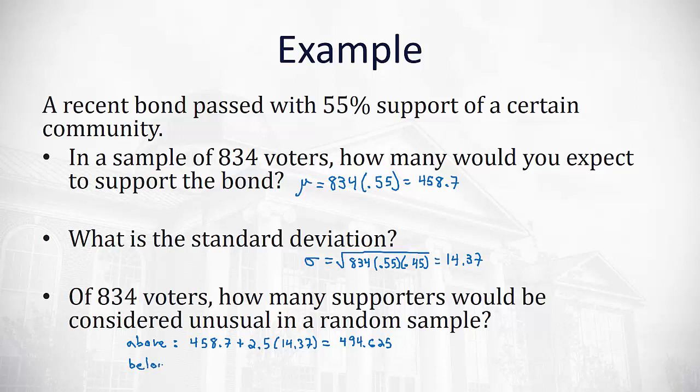Or anything below, very similar calculation, we're just going to subtract 458.7 minus 2.5 standard deviations, or 2.5 times 14.37, which gives us 422.775. So if we have less than 422.775 voters in support of the bond, we're probably skewed to the lower side, and that's also considered unusual.